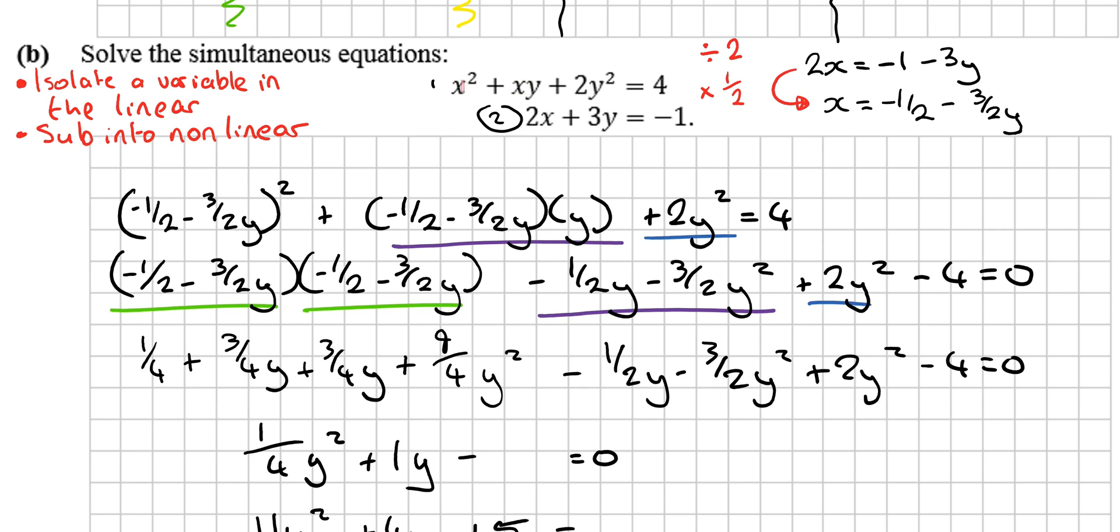What then happens is we sub it into here and here. So I'm going to rely on a little bit of highlighting. So this bit in pink is here. I'm making sure I have the squared. And it's getting subbed in here. Now, if you count the variables that I have in this equation, I have a y, a y, a y, and a y. The only variable that I have is a y. Meaning it's got one variable in one equation and I can solve it.